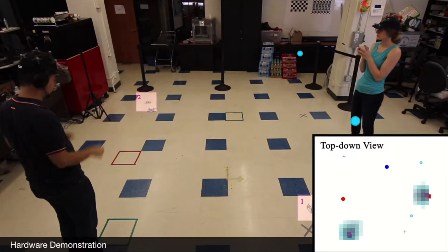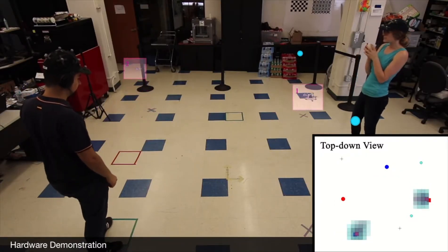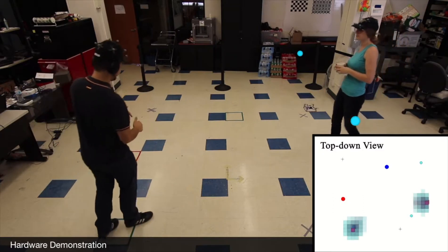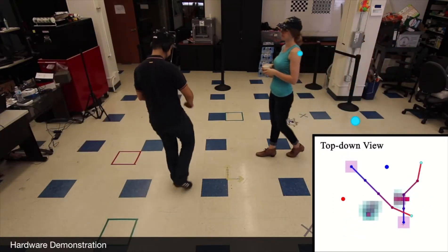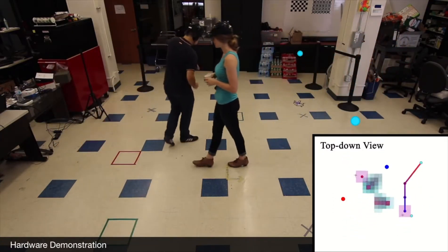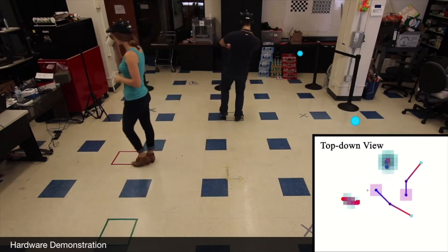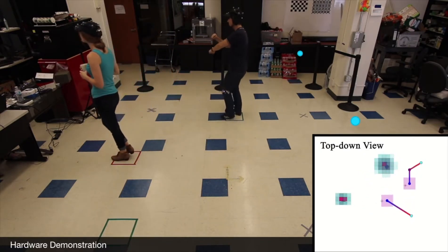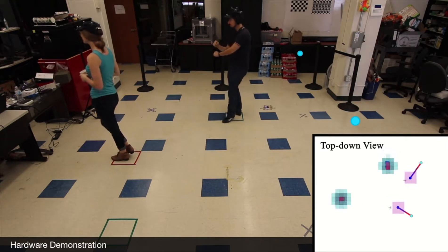Here we demonstrate our framework in hardware. The two quadcopters plan using their priority order, with their tracking error bounds shown in purple. As the humans walk across the scene, unmodeled human behavior leads to lower confidence predictions. We used an OptiTrack motion capture setup for state estimation and implemented our framework within the robot operating system.